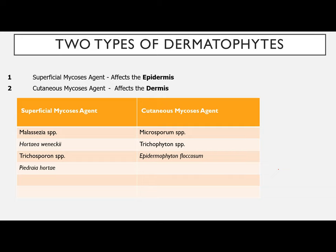For superficial mycosis agents, we have: Malassezia species, Hortaea werneckii, Trichosporon species, and Piedraia hortae. For cutaneous mycosis, we have: Microsporum species, Trichophyton species, and Epidermophyton floccosum. Take note of the two types of dermatophytes — superficial and cutaneous — and their corresponding fungi.